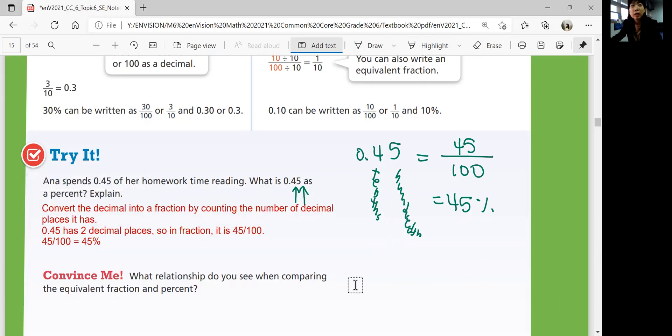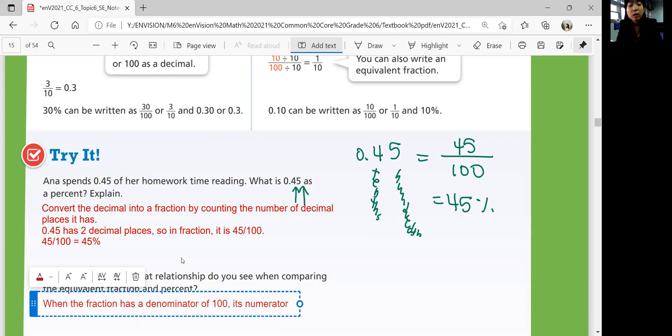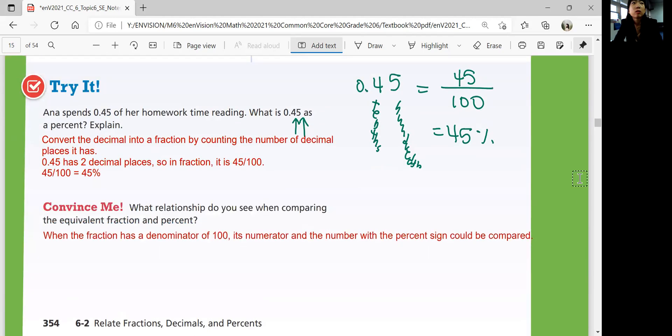So you can explain using words, say, convert the decimal into a fraction using the decimal places by counting the number of decimal places. 0.45 has two decimal places. So in fraction, 45 out of 100. 45 out of 100 is 45%. There you go. Convince me. What relationship do you see when comparing the equivalent fraction and percent? Can you see any patterns? When the fraction has a denominator of 100, it's a numerator, so the number above the fraction and the number with the percent sign are the same, or could be the same. Okay.